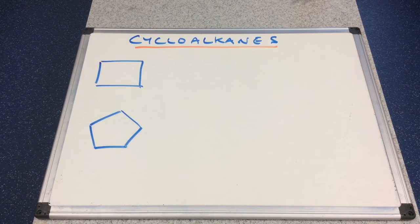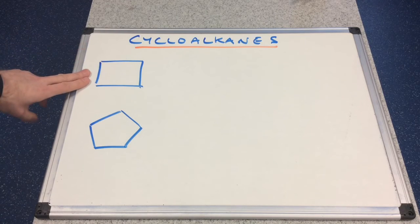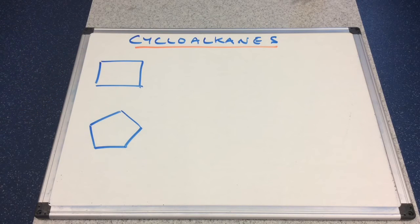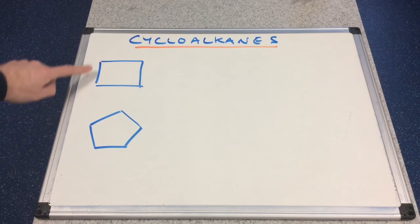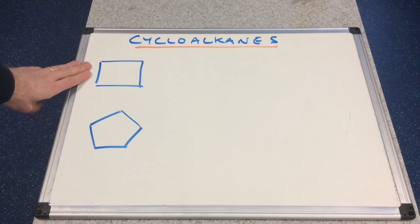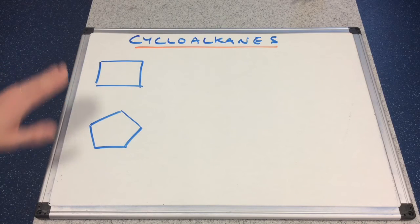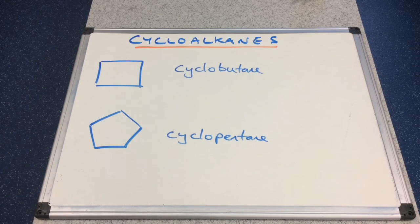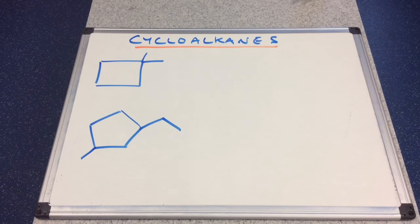So we've seen cyclopropane and cyclohexane. Let's look at a couple more. We've got a square here — that's four carbons in a cyclic arrangement, with two hydrogens on each corner — so this is cyclobutane, C4H8. And we've got cyclopentane here. You can see I've put some branches onto the cyclobutane and cyclopentane structures.